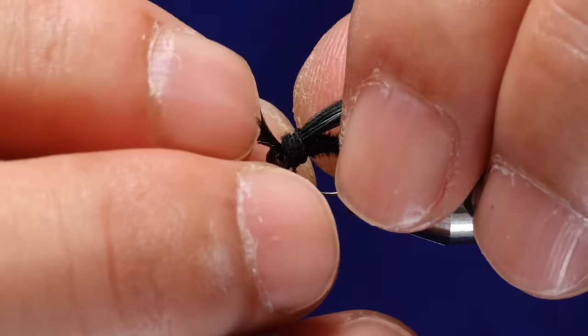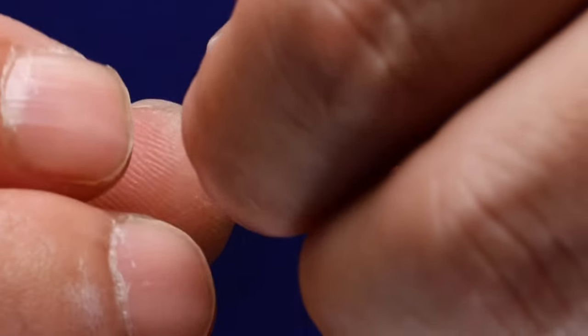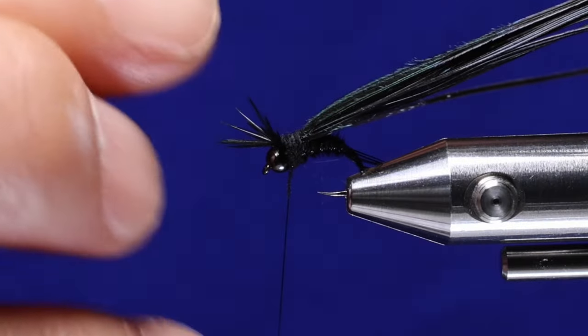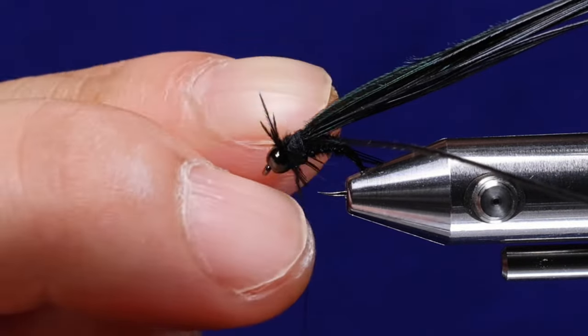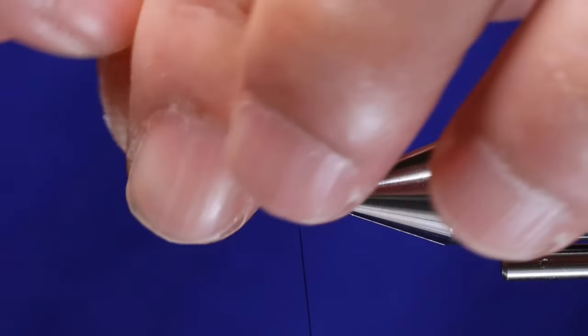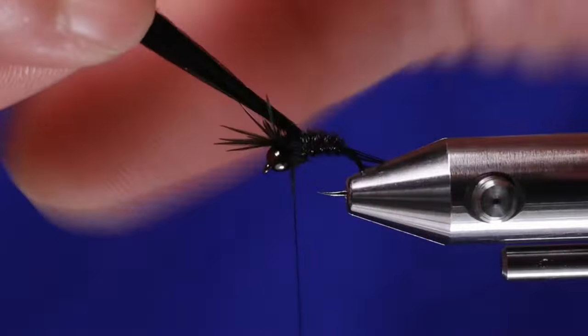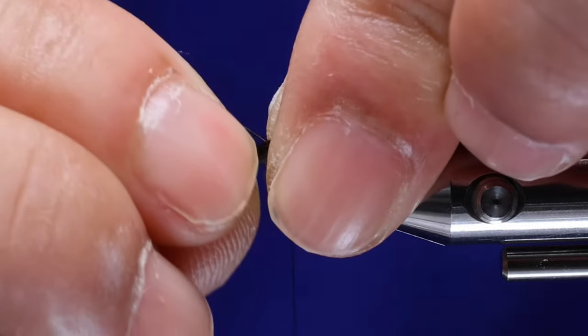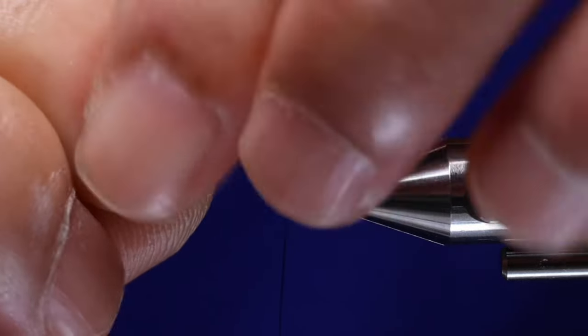And then now all you're going to do is you're going to split the pheasant tail. It's a little bit easier if you wet your fingers. Just basically push them to the side. Then you're going to take that clump and you're going to pull it forward and split the tips of the pheasant tail there to form your legs.